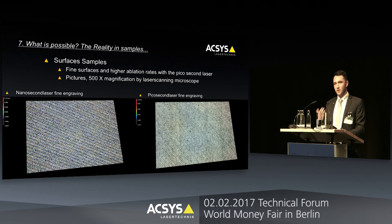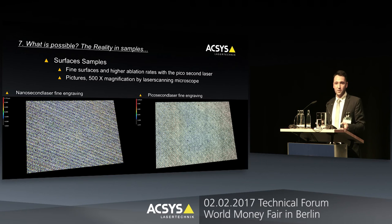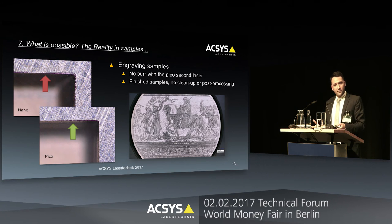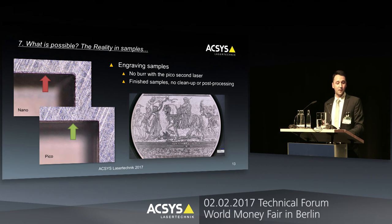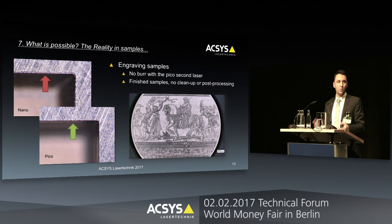Let's look at some pictures. We did a 500 times magnification picture of the fine engraving result. On the left side, the nanosecond laser; on the right side, the picosecond laser. Just by looking at the surfaces, we can see that the picosecond laser surface looks more even and smooth. We also analyzed the edge of the engraving: the nanosecond result is marked with a red arrow on top, and the picosecond result with a green arrow on the bottom. We can see there is no burr around the picosecond laser engraving. This is very important because the picosecond laser not only gives us better surface quality and ablation rate, it also decreases post-processing — no glass bead blasting, sand blasting, or cleaning, and no need to repolish the die after engraving.